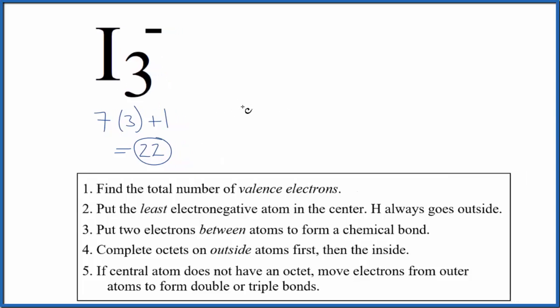So we'll put three iodines up here, and then we're going to put two electrons between each of the iodines, and that's going to form our chemical bond. So we put two electrons between each iodine.